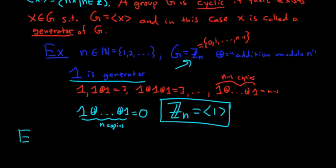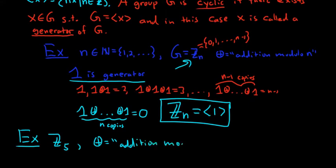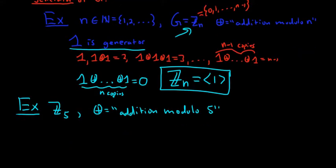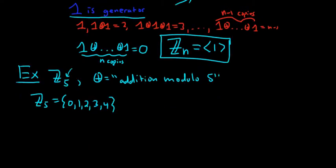Let's look at a specific case: when n equals 5. We have Z sub 5 with addition modulo 5. We know 1 is a generator, but are there others? It turns out every non-identity element is a generator because 5 is prime, but let's just brute force it. Z sub 5 contains the numbers 0, 1, 2, 3, 4. Let's check 3 — 3 should be a generator.